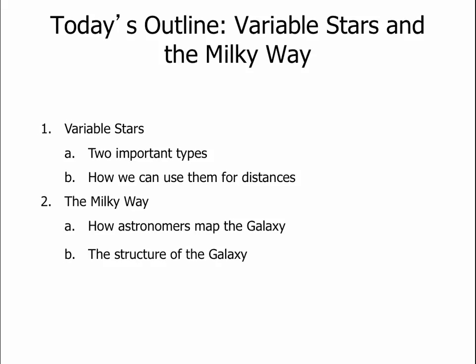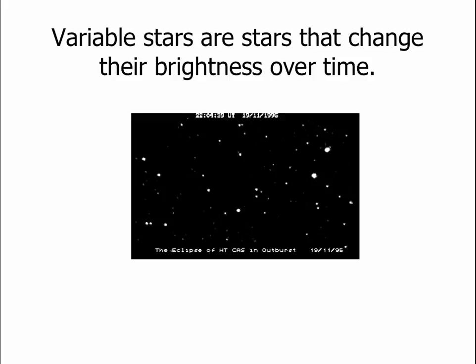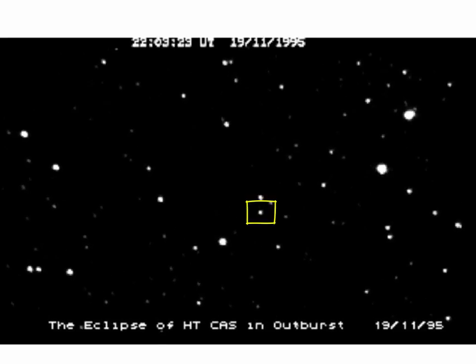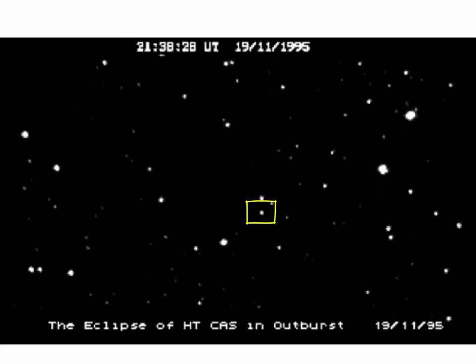Before we talk about our galaxy we need to talk about variable stars. There's a very specific type of variable star that's very important for studying not just our galaxy but other galaxies. In particular these stars help us to figure out distances to other galaxies. And then once we know that, we will talk about how we've mapped out our galaxy, the Milky Way, and the overall structure of it. A variable star is a star that changes brightness over time, and in this repeating video you can see near the center there's a star that is regularly changing its brightness, starting off bright and fading away.